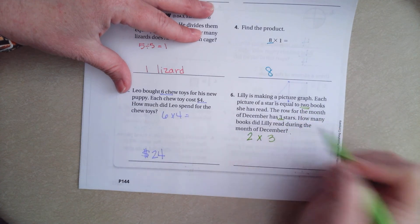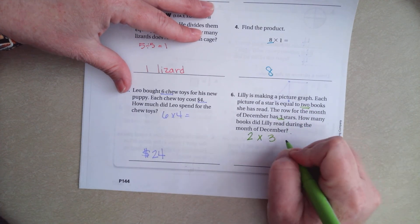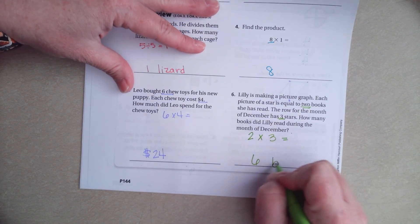The row for the month of December has three stars. So, two books, three stars. How many books did she read during the month of December? Two times three. Six books.